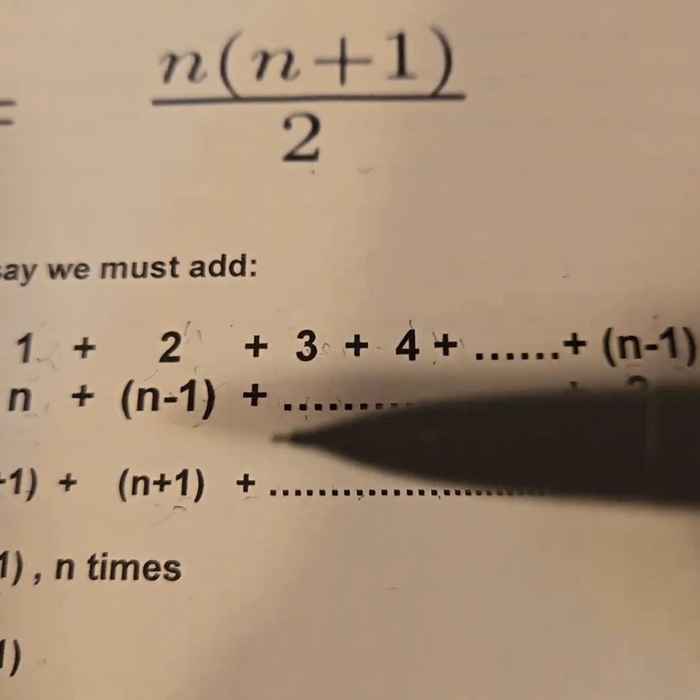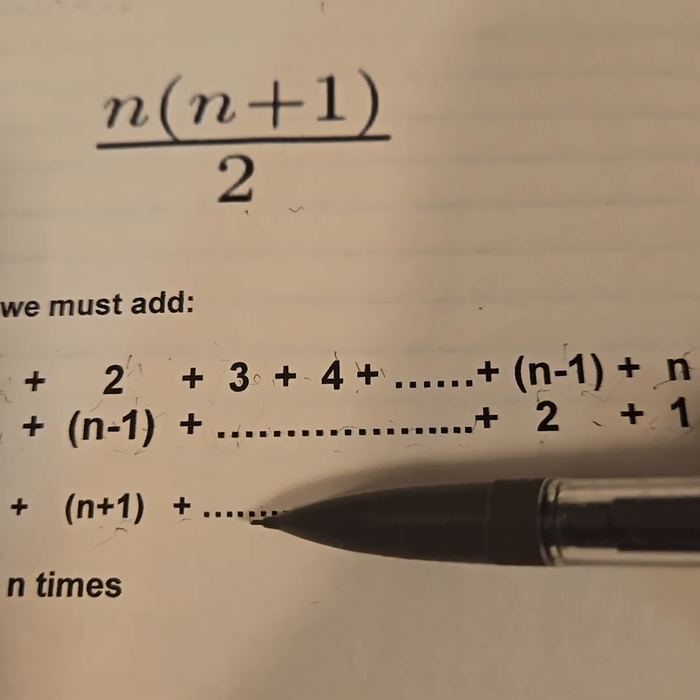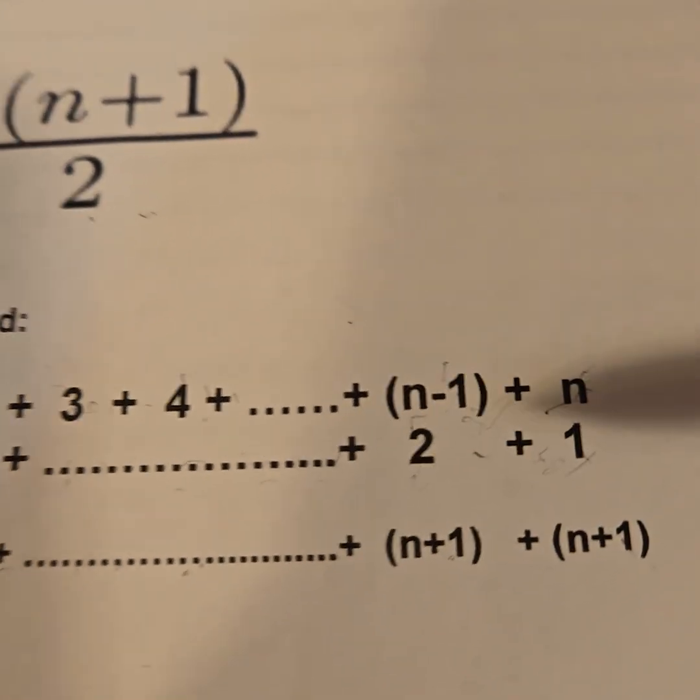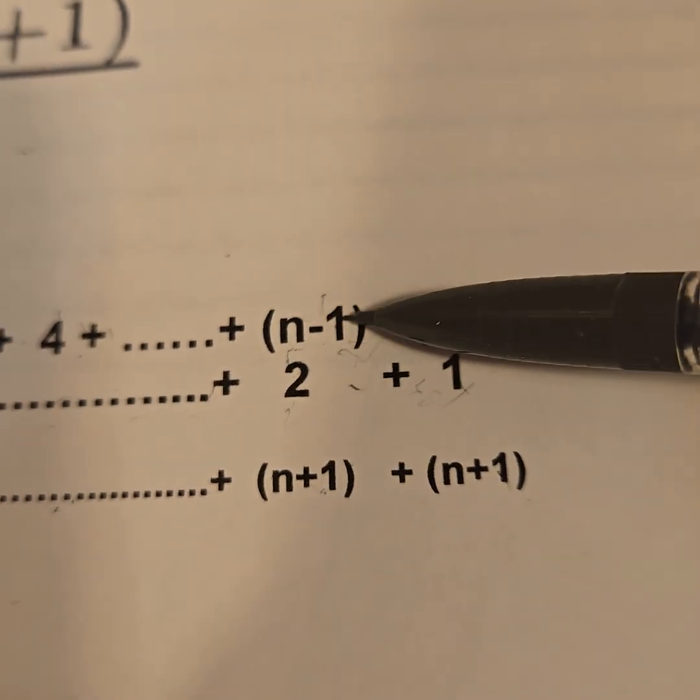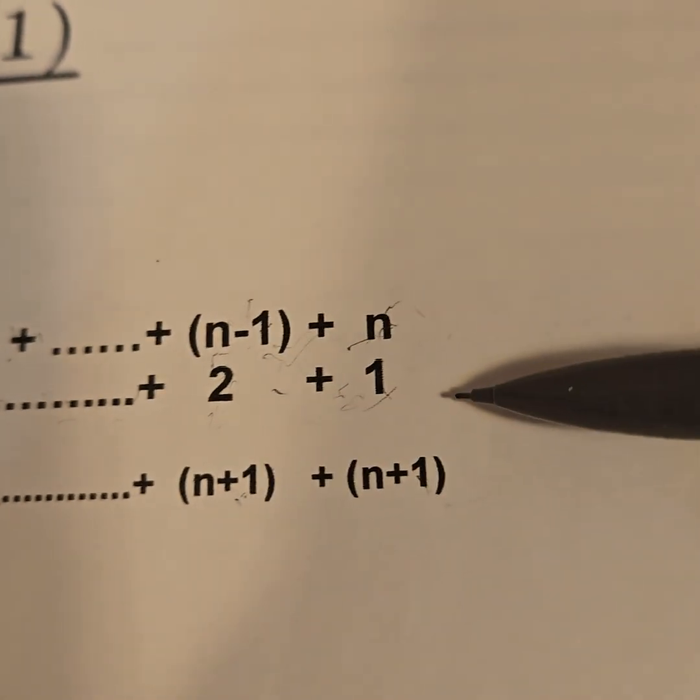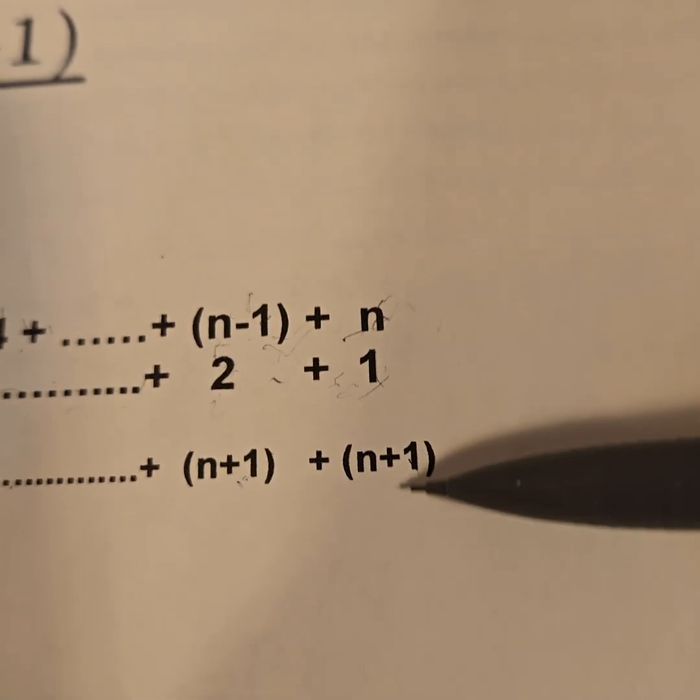So I'll get another n+1, and another n+1, all the way until the very end. (n-1) + 2 is n+1, and n + 1 is n+1.